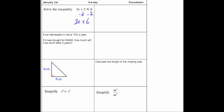Next, we don't want the times by 3, so we're going to do the opposite, divide by 3. We're going to divide both sides by 3. 3x divided by 3, that's just x, and that's less than or equal to, well, 6 divided by 3 is 2. So the answer is x is less than or equal to 2.